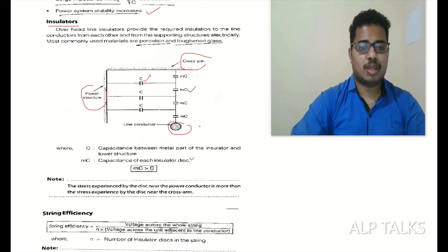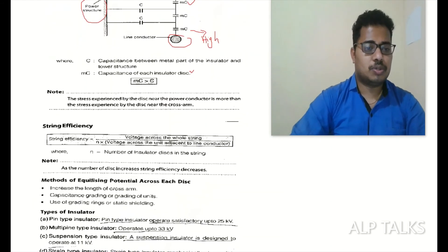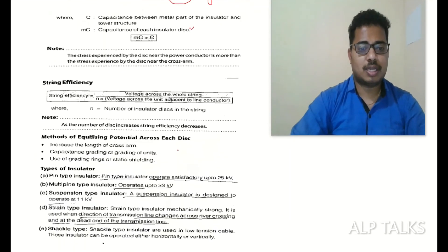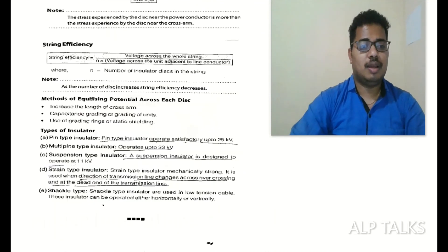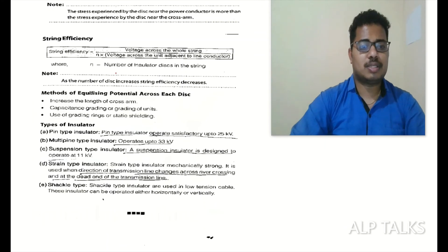Generally MC is greater than C. The stress experienced by the disc near the power conductor is more than stress experienced by the disc near the cross arm. This disc will offer highest capacitance value, so there will be a factor for string efficiency. String efficiency is voltage across the whole string divided by n into voltage across the unit adjacent to the line conductor, where n equals number of insulator discs in the string.